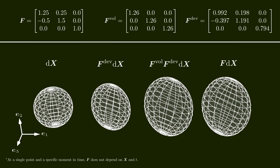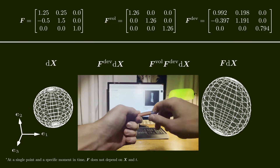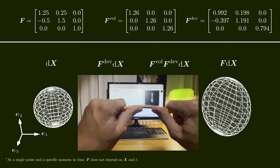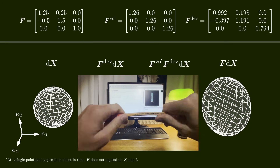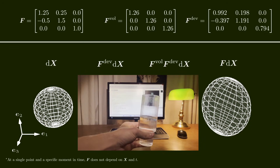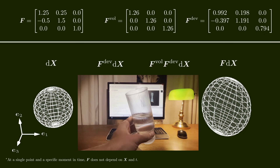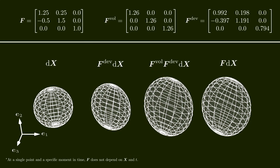Decompositions like this are extremely useful because they help us interpret the deformation gradient. In continuum mechanics, the volumetric-deviatoric decomposition is indispensable, because matter typically shows a higher resistance to a change in volume than to a change in shape. Using the decomposition, we can separate volumetric and deviatoric contributions of the deformation gradient and control how much they should affect the stresses in the matter. In the extreme case of incompressible matter, like water, we have to make sure that the volumetric part equals the identity, such that only the deviatoric part remains.